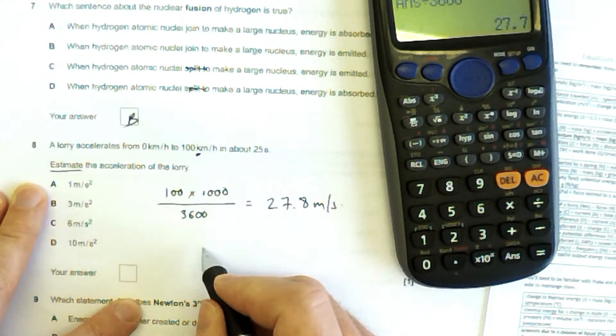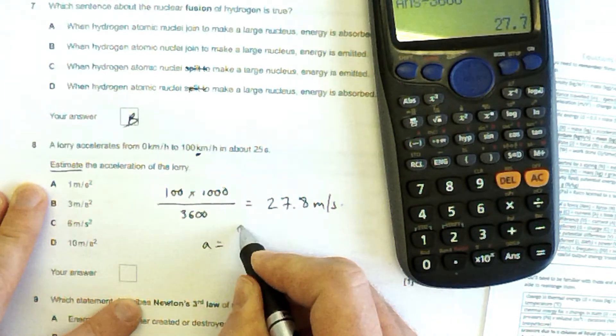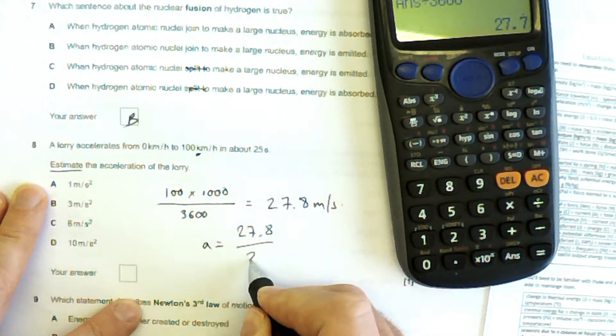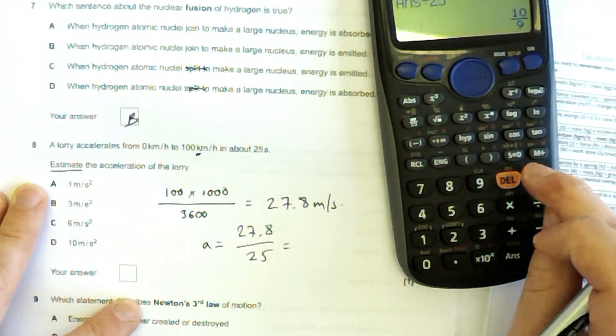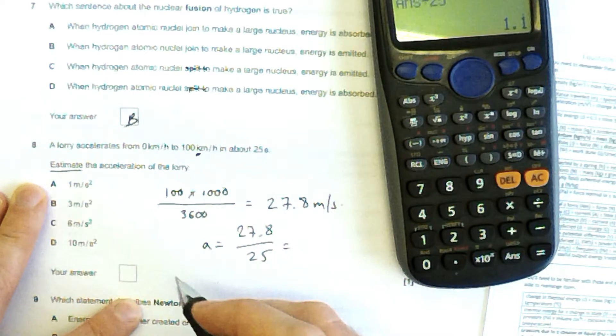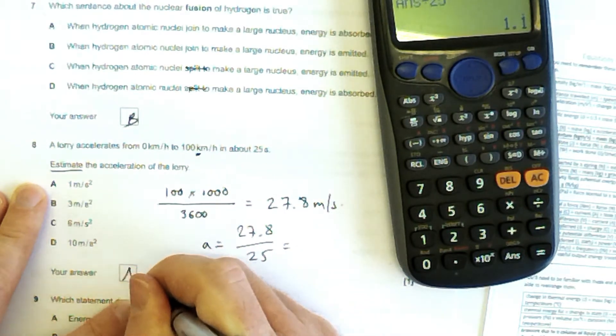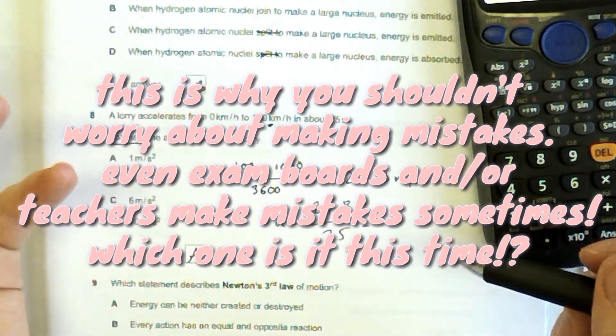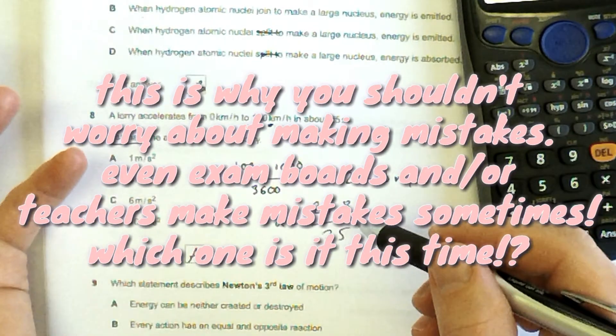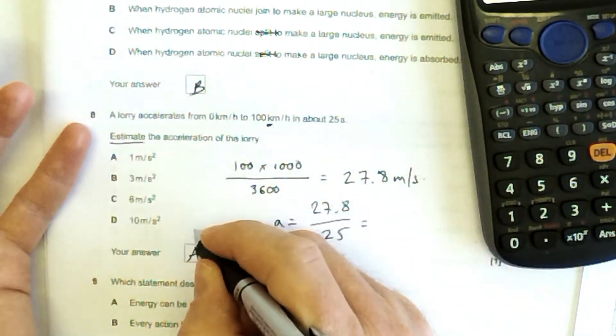But it's not asking me for the speed, it's asking me for the acceleration. So 27.8 over 25 gives me 1.1. So the answer is A. In the mark scheme, it says B. So if I've done something wrong, can you leave a comment somewhere? Because I've looked over this, and I can't see where I've gone wrong. Just to remind you, the acceleration is the change in speed over time.